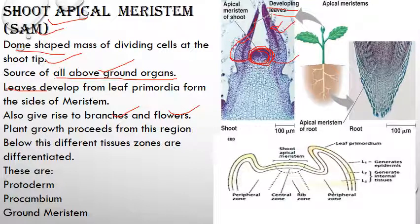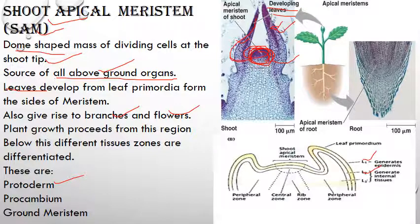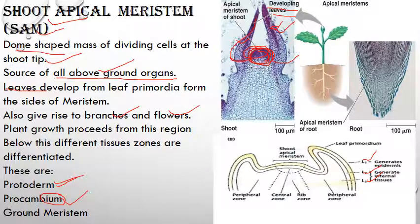Below the shoot apical meristem, different tissue zones are differentiated. There are three layers, or tissue zones: first is protoderm — the outermost layer that will form the epidermis; second is procambium, which will give rise to the vascular tissue; and third is ground meristem, which will give rise to ground tissue like cortex, endodermis, and pith. These are the structures formed by the shoot apical meristem.